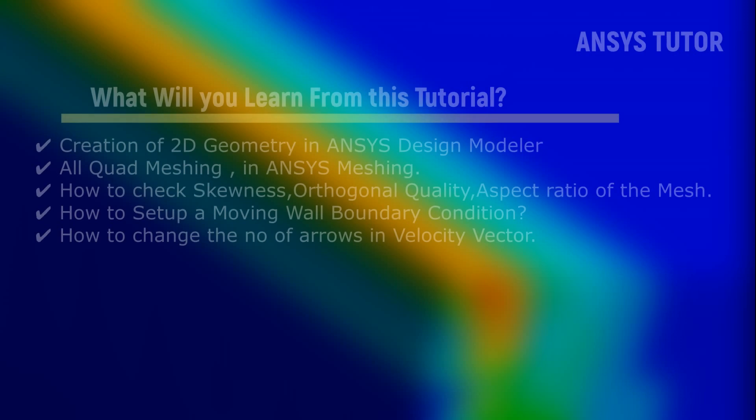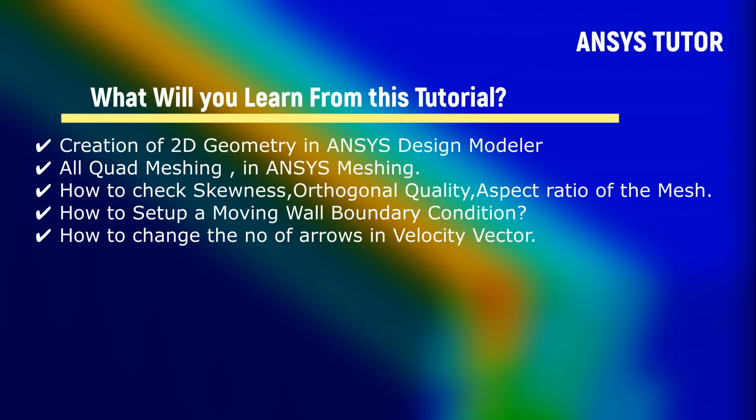From this demonstration, you would be able to know how to create a 2D geometry in ANSYS Design Modeler, how to mesh the geometry using all quadrilateral cells in ANSYS Meshing, how to check skewness, orthogonal quality, and the aspect ratio of the mesh, how to set up a moving wall boundary condition in ANSYS Fluent, and how to change the number of arrows in the velocity vector.